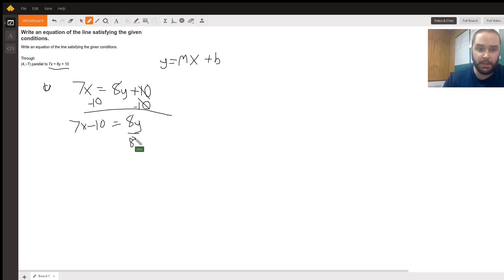Now if we divide everything by 8 to get the y by itself, then that cancels out, leaving you with y on one side. And it's equal to 7/8x - 10/8, which reduces to 5/4.